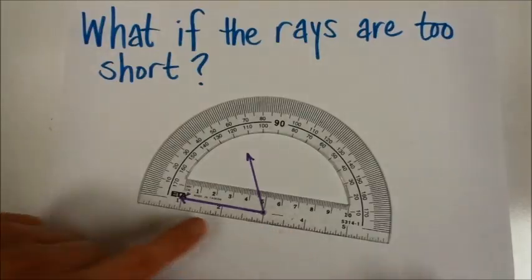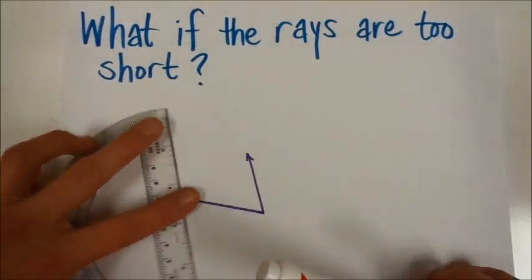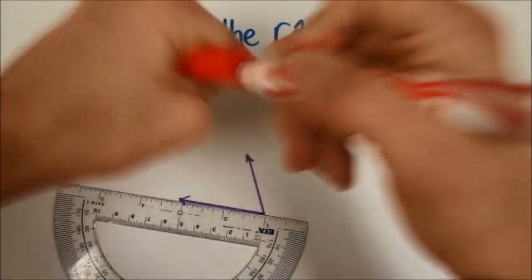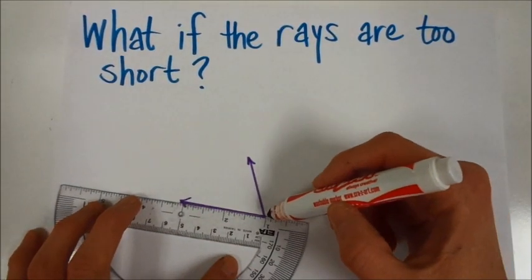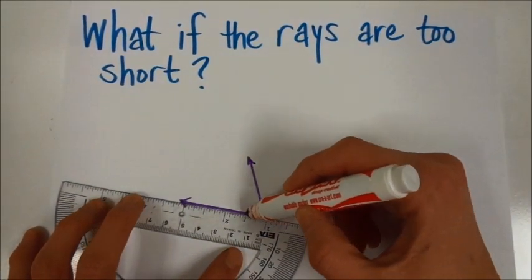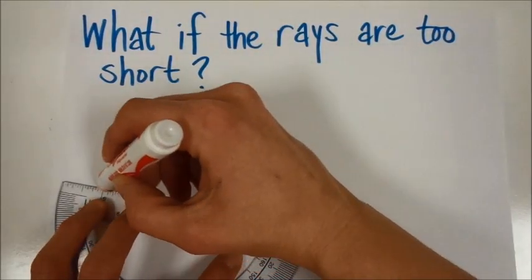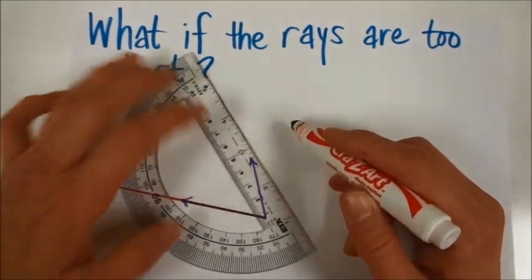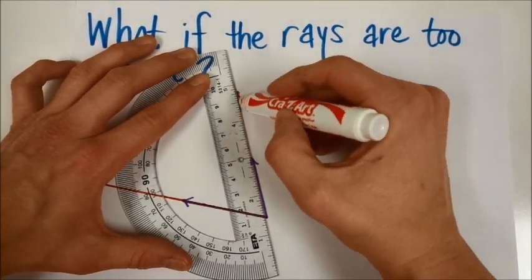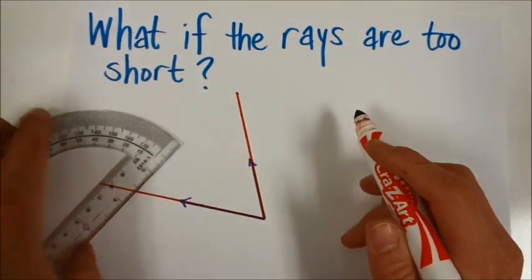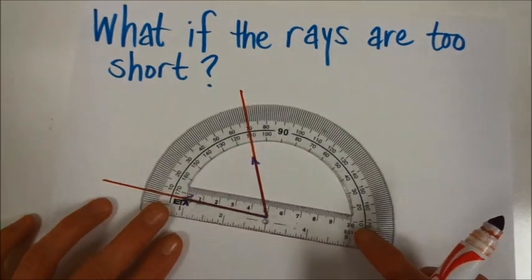The cool thing is that your protractor also has a ruler on the bottom of it, so if you will use it as a ruler to extend the lines of your angle, then you can measure it. So put it down, be very exact about how your line is being added, making sure that you're drawing straight lines.